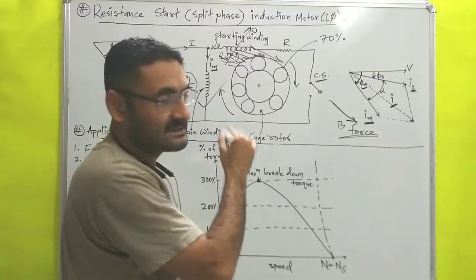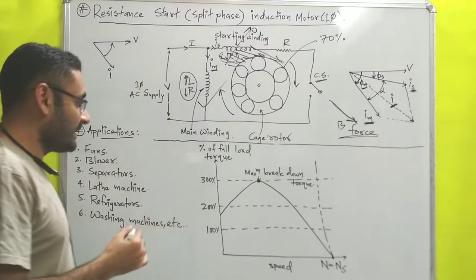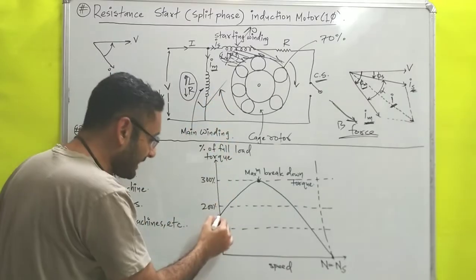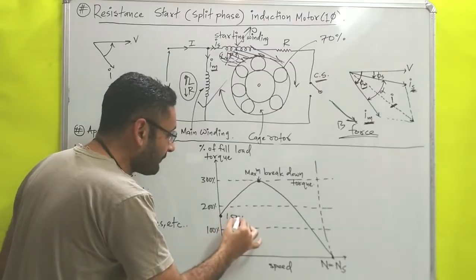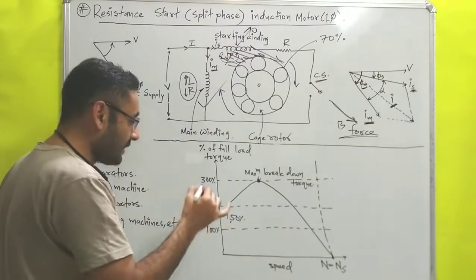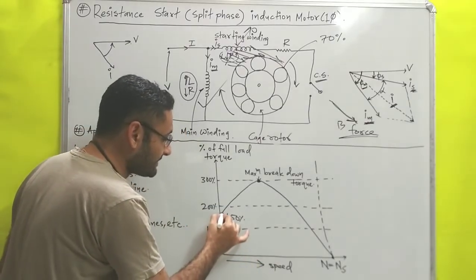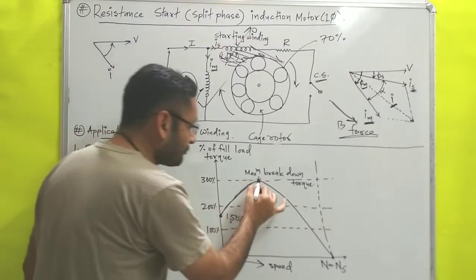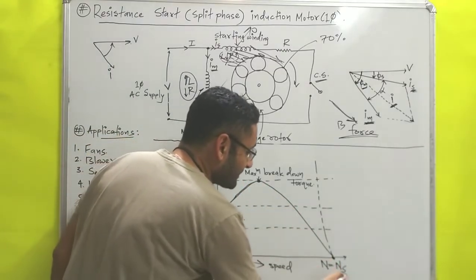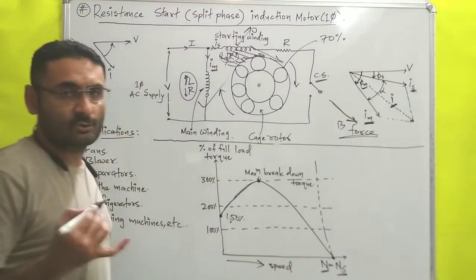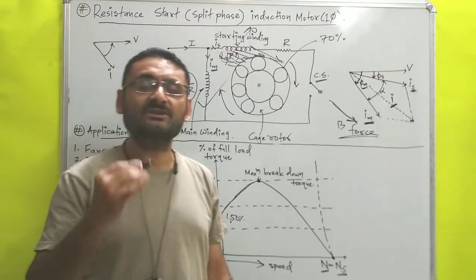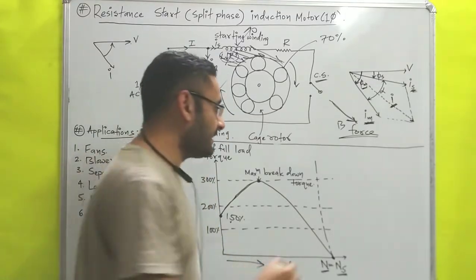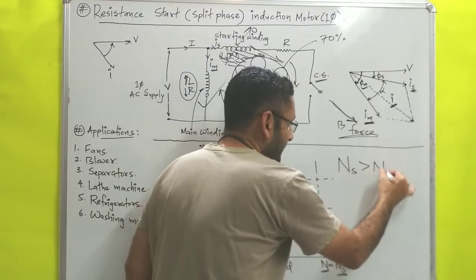Now we will understand the torque-speed characteristic. From the diagram, the initial torque when starting the motor is very high — around 150 percent of its maximum load value. As the speed of the motor increases, the torque also increases up to the maximum breakdown torque, and after that torque decreases, becoming zero when the synchronous speed equals the actual speed of the rotor. Synchronous speed is the speed given by the stator and is generally greater than the actual speed of the rotor.